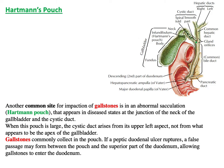Near the cystic duct there is a pouch in the gallbladder known as Hartmann's pouch, which is the most common location for gallstone accumulation. The pouch is in very close contact with the cystic duct. If there is a peptic ulcer in the duodenum with rupture, gallstones can potentially pass from Hartmann's pouch into the duodenum.